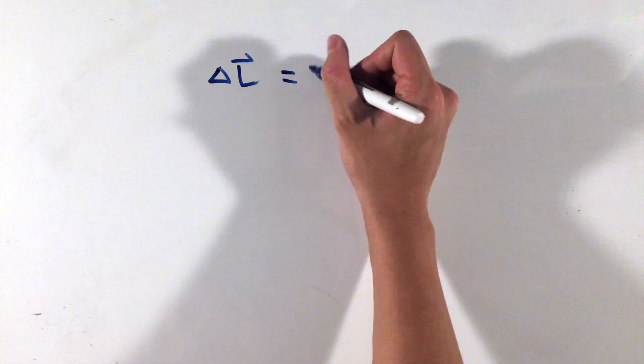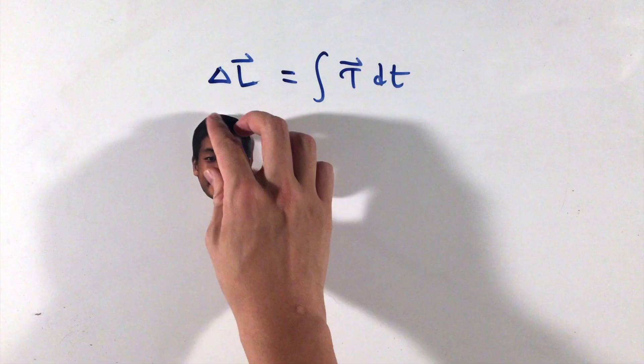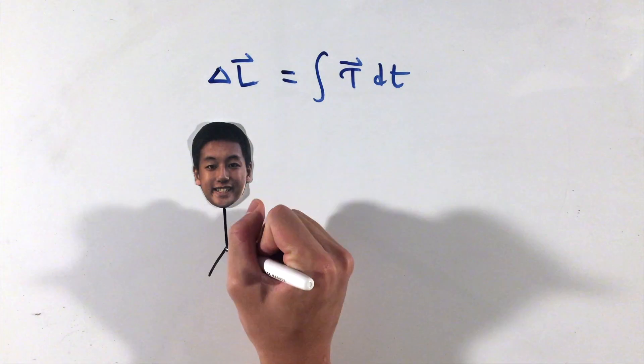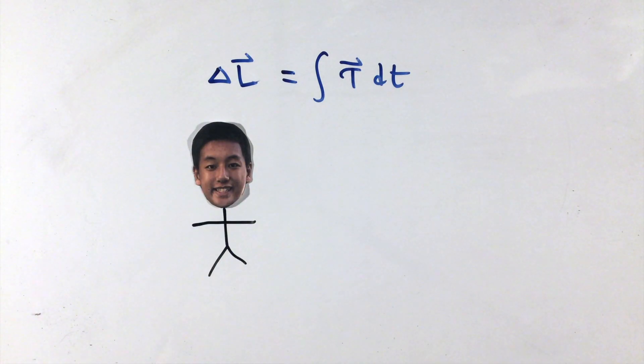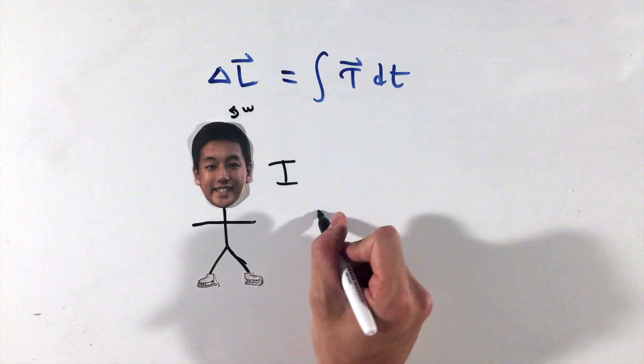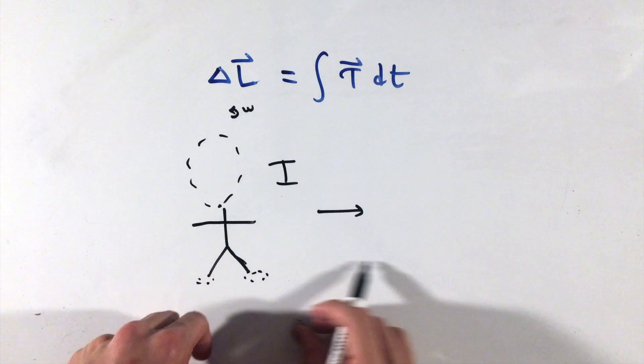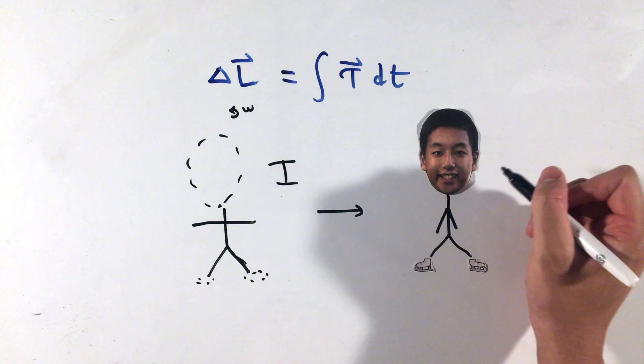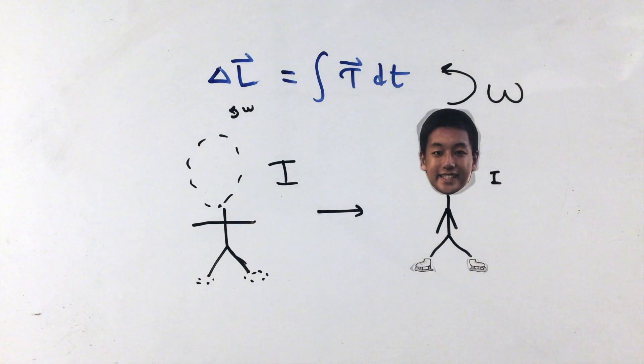Similar to how net forces change an object's linear momentum, net torques change an object's angular momentum. Angular impulse, or an object's change in angular momentum, can be calculated as the integral of a net torque with respect to time. If there are no net torques on the object, then angular momentum is conserved, meaning the total angular momentum of the system remains constant, giving us situations like the ice skating example from my past AP Physics 1 video on the topic.